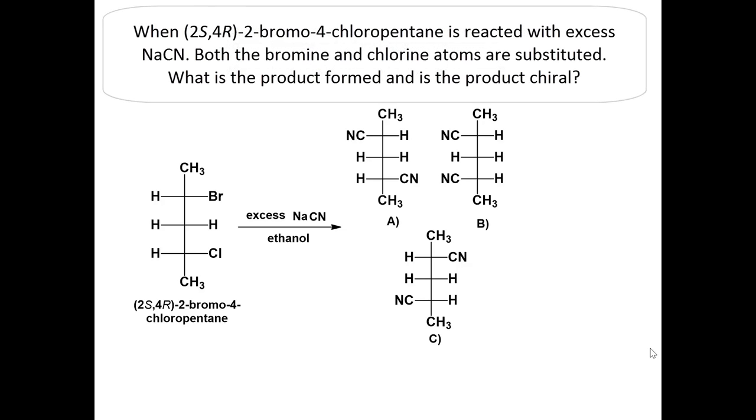When (2S,4R)-2-bromo-4-chloropentane is reacted with excess sodium cyanide, both the bromine and chlorine atoms are substituted. What is the product formed, and is the product chiral?